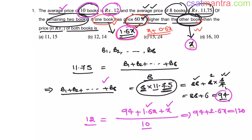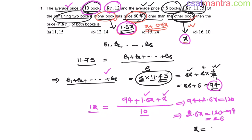So 2.6X equals 120 minus 94, which equals 26. Now X equals 26 by 2.6, that is 10.